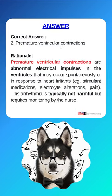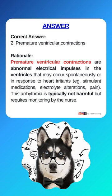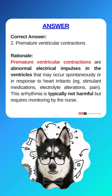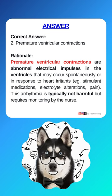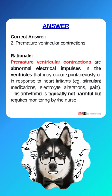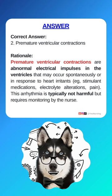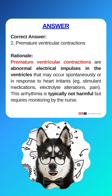Correct answer: 2. Premature ventricular contractions. Premature ventricular contractions are abnormal electrical impulses in the ventricles that may occur spontaneously or in response to heart irritants, such as stimulant medications, electrolyte alterations, or pain. This arrhythmia is typically not harmful, but requires monitoring by the nurse.